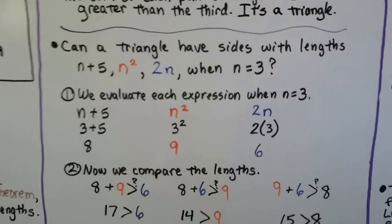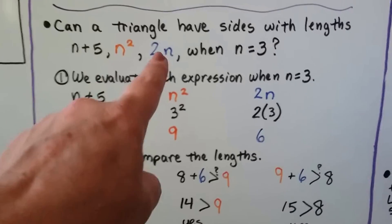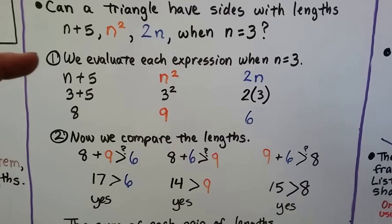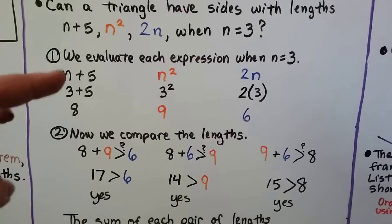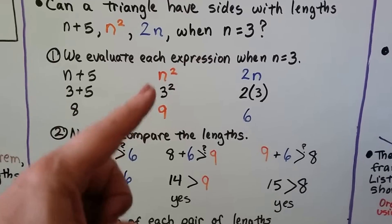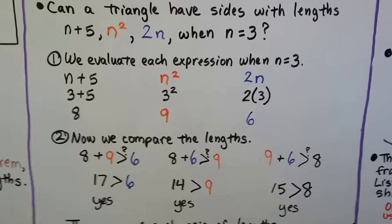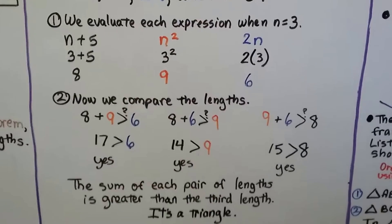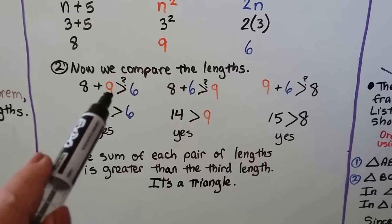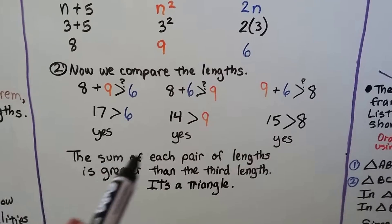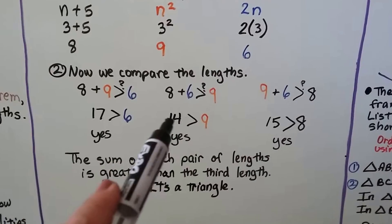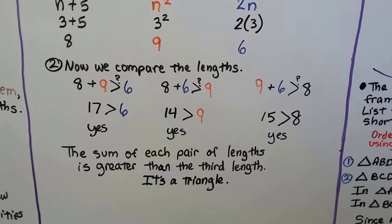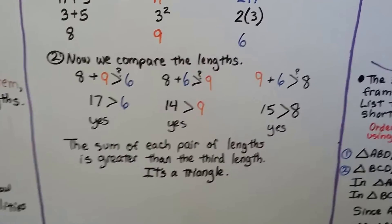Can a triangle have sides with lengths n plus 5, n squared, and 2n when n equals 3? We evaluate each expression when n equals 3. So n plus 5 would be 3 plus 5, that's 8. The n squared would be 3 squared, that's 9. And the 2n would be 2 times 3, that's 6. So now we have 8, 9, and 6. We can do 8 plus 9, that's 17, greater than 6, yes. 8 plus 6 is 14, greater than 9, yes. And 9 plus 6, that's 15, greater than 8, yes. The sum of each pair of lengths is greater than the third length, it's a triangle.